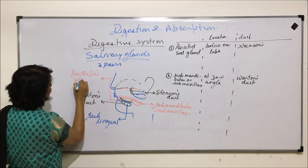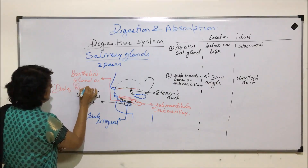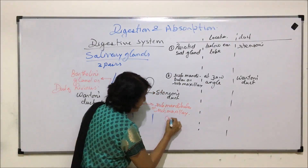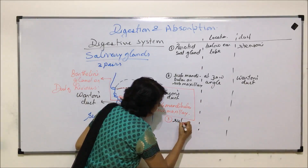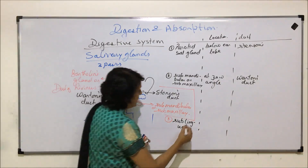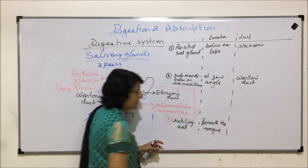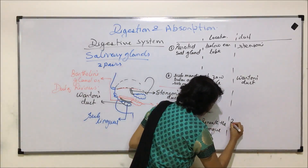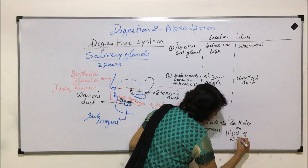...Bartholin's duct, or it is also known as the duct of Rivinus. So for the third gland — sublingual gland — location is beneath the tongue, and the duct with which the secretion is poured is known as Bartholin's duct or duct of Rivinus.